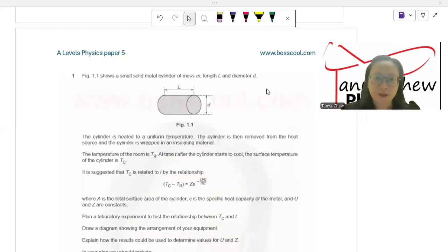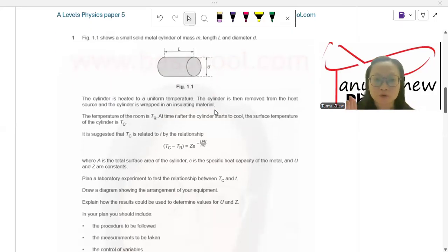the surface temperature of the cylinder is TC. It is suggested that TC is related to T by the relationship TC minus TR equals Z exponent negative UAT over MC, where A is the total surface area of the cylinder. C is the specific heat capacity of the metal, and U and Z are constants.